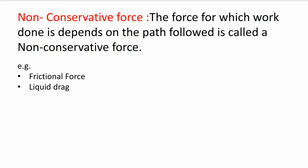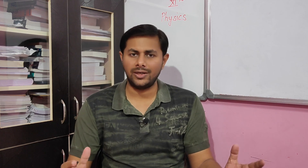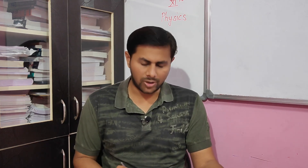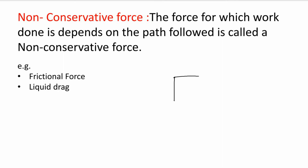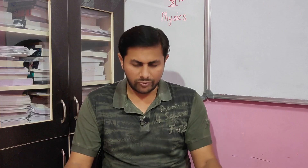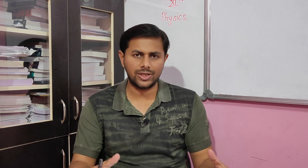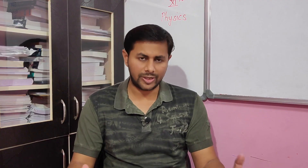For completeness, let's define a non-conservative force. A non-conservative force is one for which work done depends on the path followed. Examples include frictional force and liquid drag. If we consider a wooden cube on a horizontal surface displaced from point A to point B, there will be frictional force opposing the displacement. Work done along different paths will be different since friction always opposes relative motion — longer path means more work done, shorter path means less work done. Therefore, frictional force is a non-conservative force.